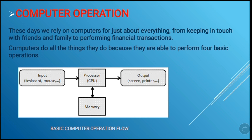These days we rely on computers for just about everything, from keeping in touch with friends and family to performing financial transactions. Computers do all the things they do because they are able to perform four basic operations. Here we have a diagram showing what the basic operations of the computer look like — from input to processing to output, and also storage, also known as memory.